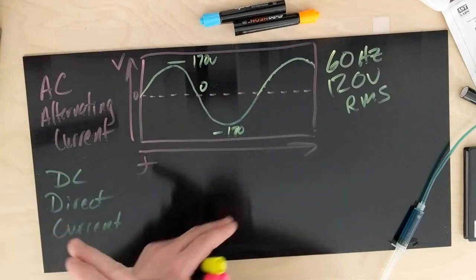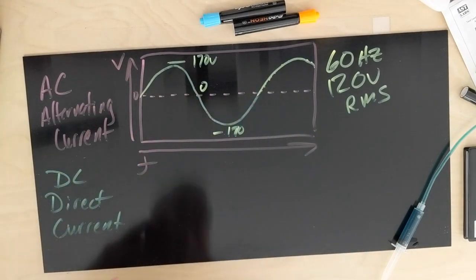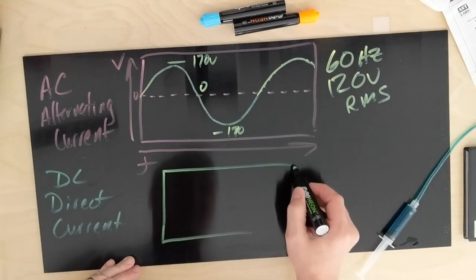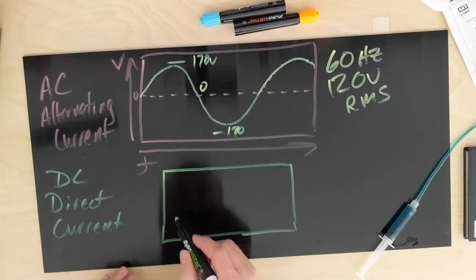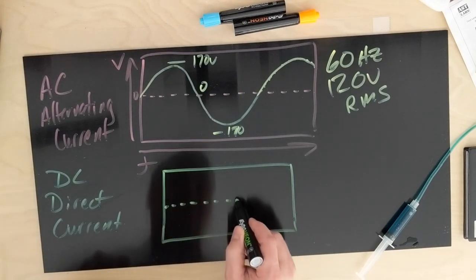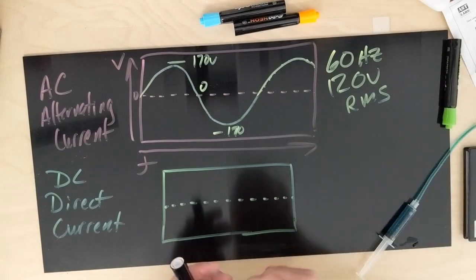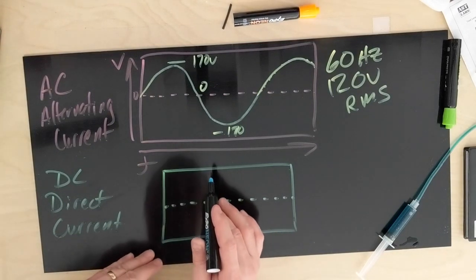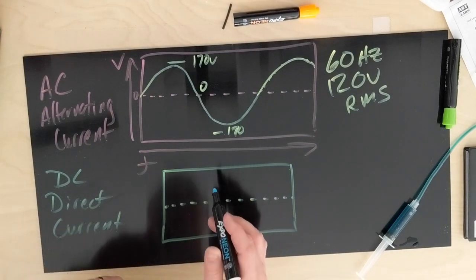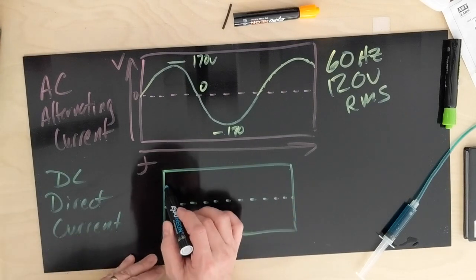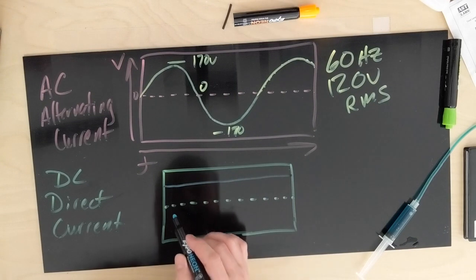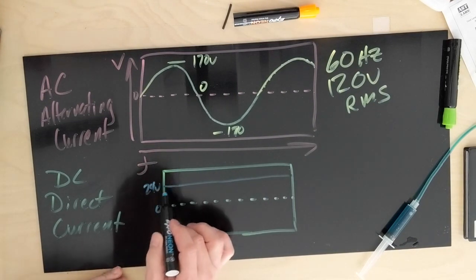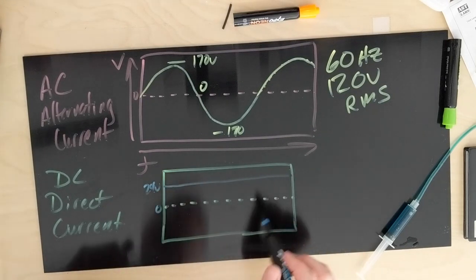If we take the same oscilloscope or the same principle with a DC line, if it's going to be a battery, a really clean DC or a really clean power supply, it's going to be almost a straight line with this being zero. Maybe it's a 24 volt supply, so we're up here at 24 volts, and it should be clean and straight.